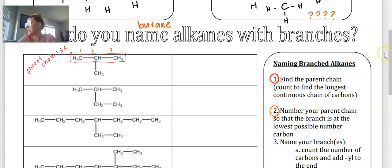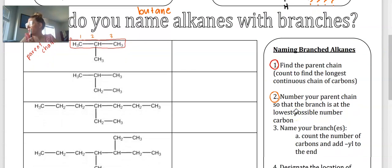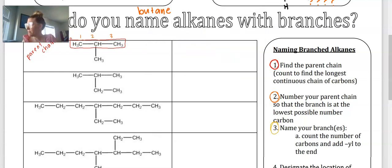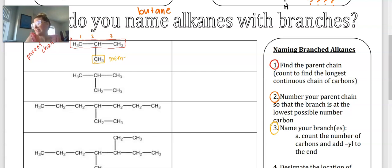Step three: name your branch or branches. Count the number of carbons and add -yl to the ending. You're still going to use reference table P, but instead of using the ending -ane, -ene, or -yne, we're going to use -yl at the end. Our branch right here has one carbon. The prefix for one carbon is meth, and the ending is now -yl, so we end up with methyl. Our branch name is methyl — one carbon ends in -yl.